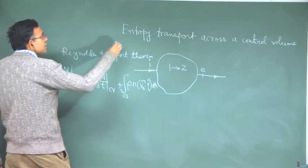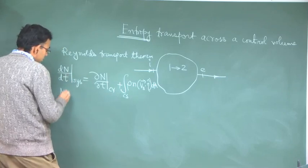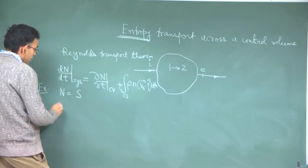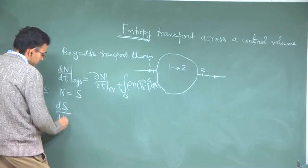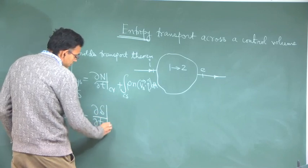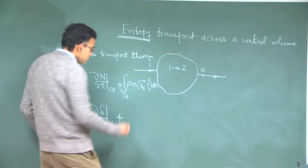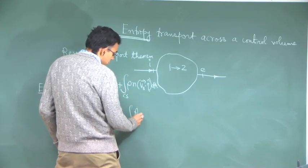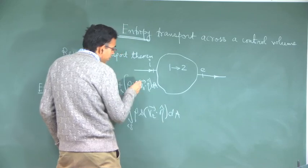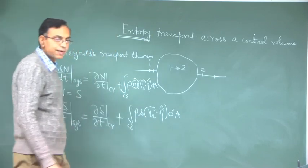For this case we are concerned about the transport of entropy, so we consider N equal to S. We have dS/dt, and since this is property per unit mass, capital S per unit mass becomes the lowercase s, specific entropy.